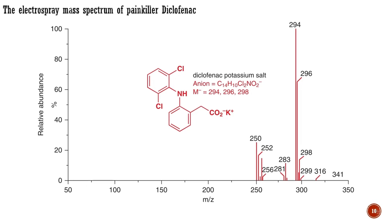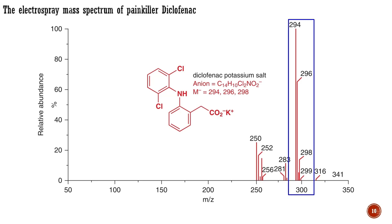The mass spectrum of a chlorine-containing molecule is likewise easy to identify from two peaks separated by two mass units, but this time in a ratio of 3 to 1, arising from the 3-to-1 isotopic ratio of chlorine-35 and chlorine-37. The behavior of molecules possessing more than one bromine or chlorine atom is illustrated using the example of the painkiller diclofenac. This spectrum was obtained from commercial tablets containing the potassium salt of the active ingredient. The electrospray mass spectrum shows the mass of the carboxylate anion as three peaks at 294, 296, and 298, with relative sizes determined by the 75% probability that each chlorine atom will be chlorine-35 and the 25% probability that it will be chlorine-37.